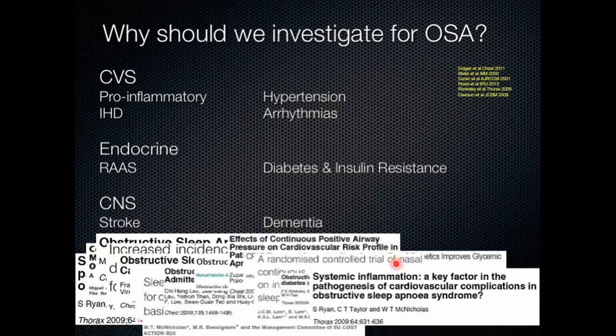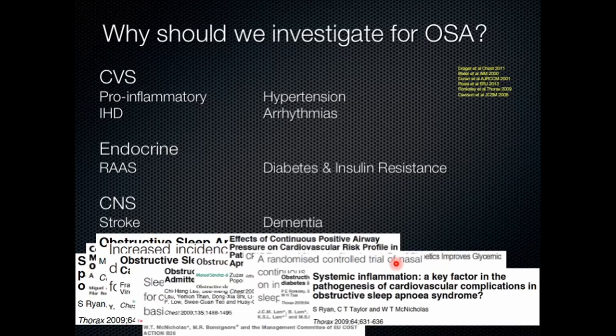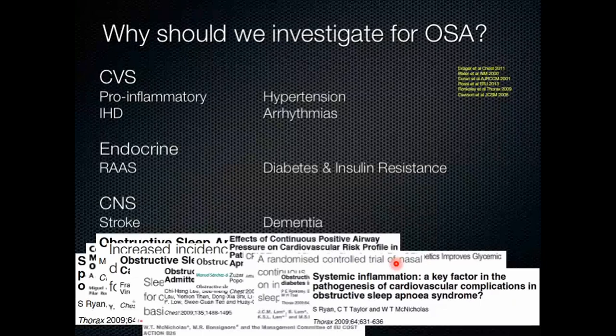Why should we investigate for obstructive sleep apnea? Sleep apnea compounds metabolic disease. Cardiovascularly, it is pro-inflammatory, drives hypertension, premature atherosclerosis, ischemic and peripheral vascular disease, and arrhythmias — particularly atrial fibrillation. From an endocrine perspective, it increases renin and aldosterone levels and drives insulin resistance. From a neurological perspective, there is a strong association with premature strokes and dementing processes.